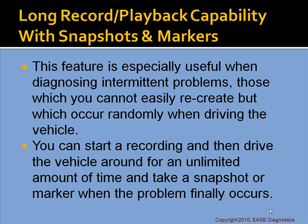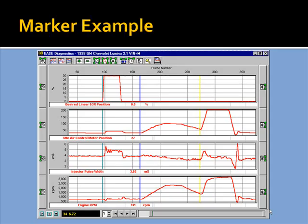This feature is especially useful when diagnosing intermittent problems — those which occur randomly when driving. You can start a recording and drive the vehicle for an unlimited amount of time, taking a snapshot or marker when the problem finally occurs. Here's an example of some markers — colored lines in the graph. The EGR position was ramped up to 30% using bidirectional controls, then the idle air control motor position was moved, and you can see the corresponding injector pulse width and RPM respond on the right-hand side.